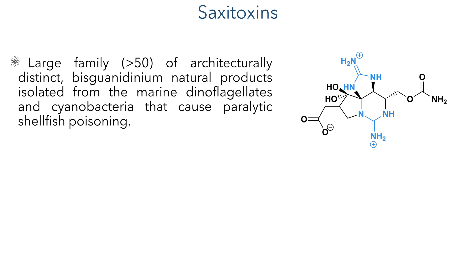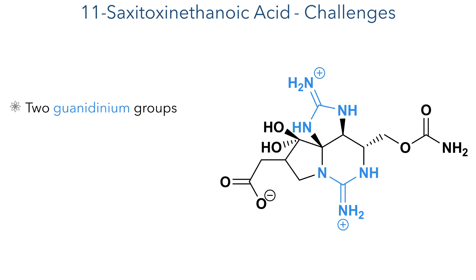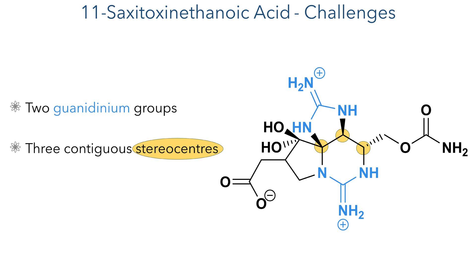The saxitoxins are a large family of bisguanidinium natural products isolated from marine dinoflagellates and cyanobacteria, known to cause paralytic shellfish poisoning. These compounds act by inhibiting the flow of ions through voltage-gated sodium ion channels in a similar manner to tetrodotoxin, another guanidinium compound. The guanidinium groups present a challenge in synthesis, in addition to the three contiguous stereocenters found in the tricyclic fused ring system. The high degree of complexity and relatively small size of this molecule make it an interesting challenge for total synthesis.